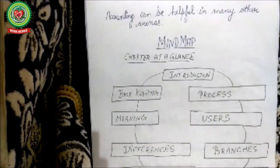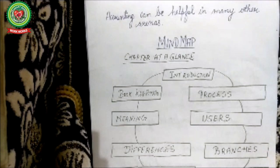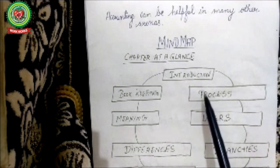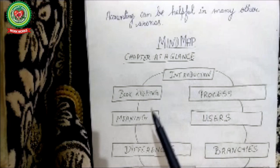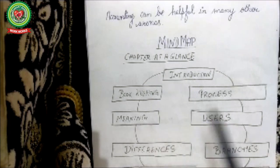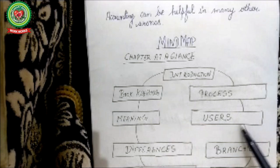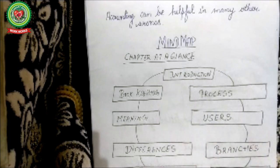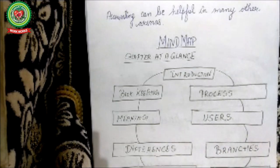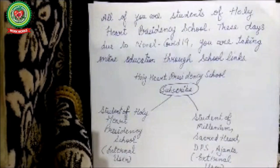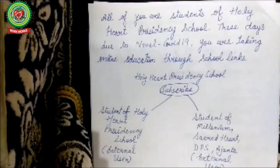Before discussing the topic, let us first go through the chapter at a quick look. So far we have covered introduction, bookkeeping, bookkeeping meaning, process, differences, events, and objectives. Today we are going to discuss about users of accounting information.